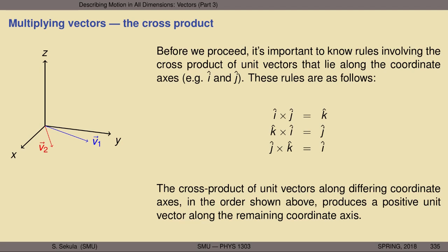The cross product of î and ĵ, in that order, gives k̂. In other words, the cross product of a vector along X with one along Y gives a vector along Z. This illustrates the utility of the cross product: if you have two vectors and need a third perpendicular to those two, the cross product will help. It's a very nice mathematical operation. So, î × ĵ = k̂.